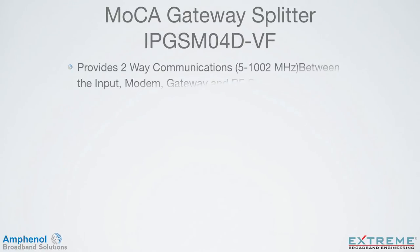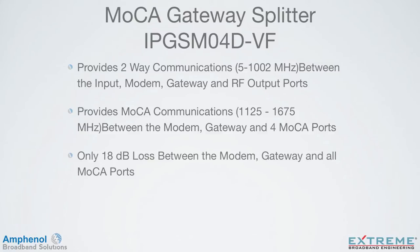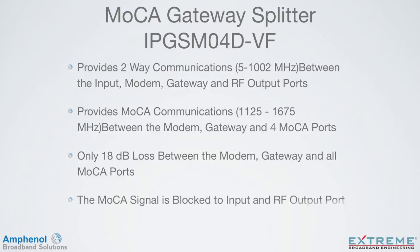The MOCA gateway splitter provides two-way communications from 5 to 1002 MHz between the input, modem, gateway, and RF output ports. It also provides MOCA communications from 1125 to 1675 MHz between the modem, gateway, and the four MOCA ports. There's only 18 dB of loss between the modem, gateway, and all of the MOCA ports. This is what makes the gateway splitter unique from other splitters. The MOCA signal is blocked to the input and RF output port, so there's no external point of entry filter needed.